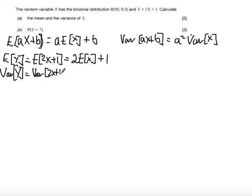This is calculated by the coefficient of X, which is 2, squared, times the variance of X. So at this point, all I need is the expectation of X and the variance of X.